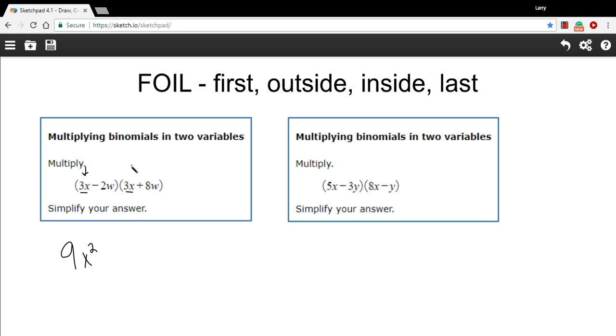Now we multiply the outside terms. That's a 3x times an 8w. The 3 times the 8 part is 24, and the x times the w part we just write as xw, or wx. Now we go to the inside terms. That's a negative 2w and a negative 3x. So that's a negative 6 for the number part, and another xw.